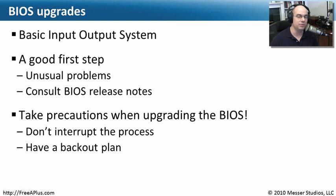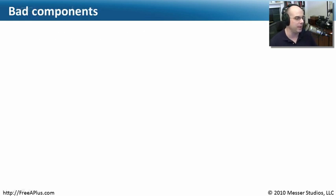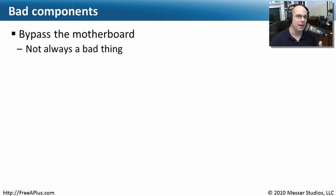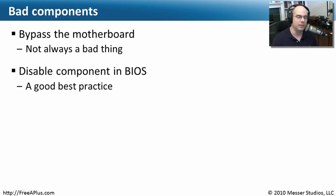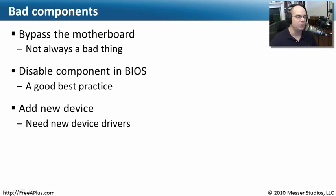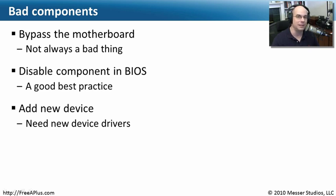You should also have a backup plan — maybe the newest version of the BIOS causes some other kind of problem, so make sure you have the older version available if you need to revert. When dealing with bad components, bypassing those in the BIOS isn't a bad idea. You can disable the serial port, parallel port, or built-in network connection right in the BIOS configuration — it's a software-based power switch so your operating system will never see those bad components. If you add a new adapter card to replace a bad onboard one, make sure you have the correct device drivers for it.